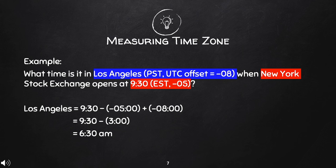As mentioned earlier, since we are moving towards the left, we will subtract the UTC offsets: 8 minus 5 is 3. Therefore, 9:30 minus 3 equals 6:30. So, when the New York Stock Exchange opens at 9:30 in the morning, it is 6:30 a.m. in Los Angeles.